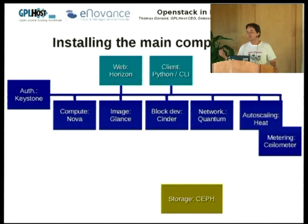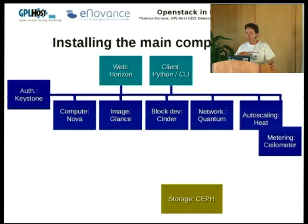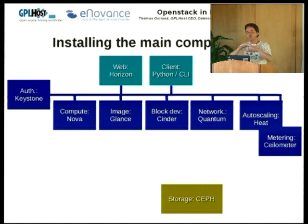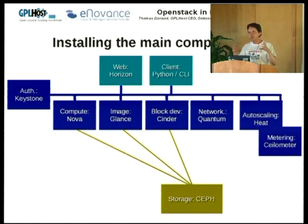For storage, you can either use Cinder with an LVM slice pushed to iSCSI, but I use Ceph because it handles storage for everything in OpenStack — including object storage, image storage, and Cinder. So you plug Ceph into Cinder, Glance, and Nova, and each of them has to be configured to access your Ceph storage.